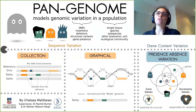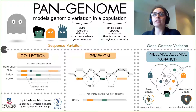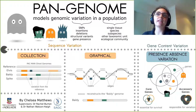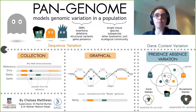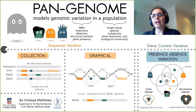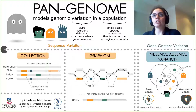Graphical pangenomes reduce reference bias, which is seen in improvements in variant calling and genotyping accuracy. As a result, they're beginning to be used in the place of a single linear reference genome, but there are still a few challenges to overcome before this approach becomes mainstream. At a higher level, graphical pangenomes have applications in precision medicine, for studying structural variants within a population, and for studying the evolution of closely related species.